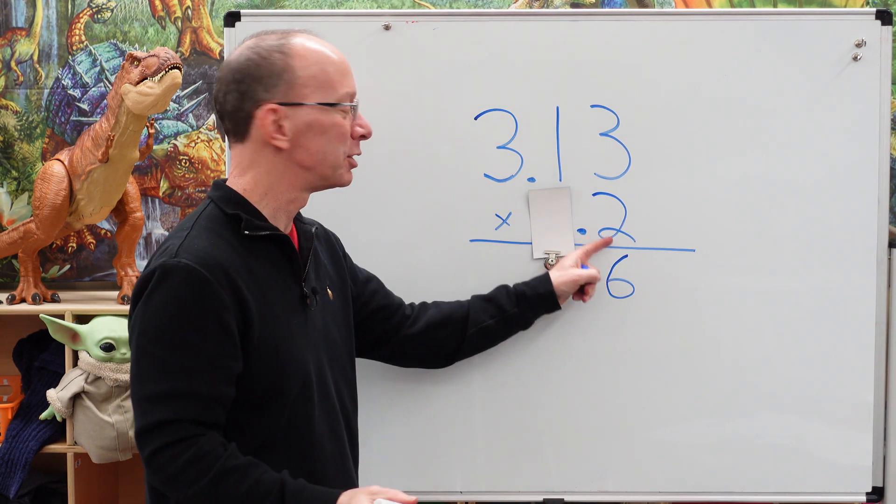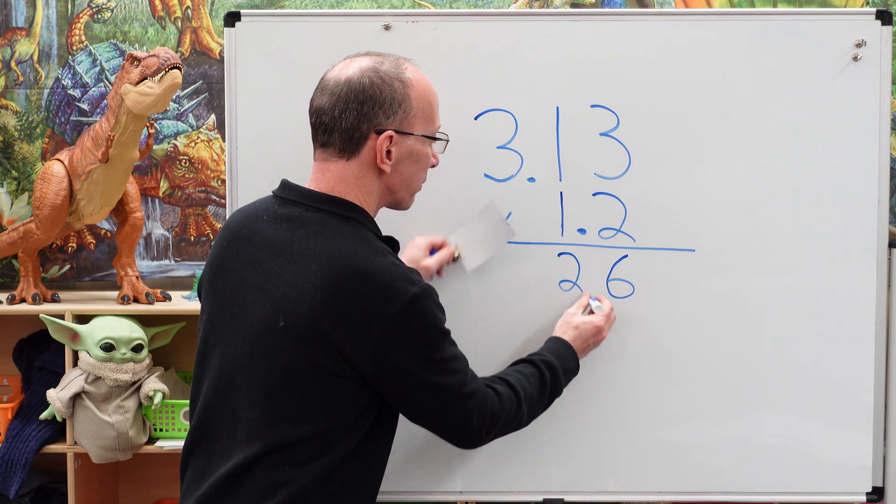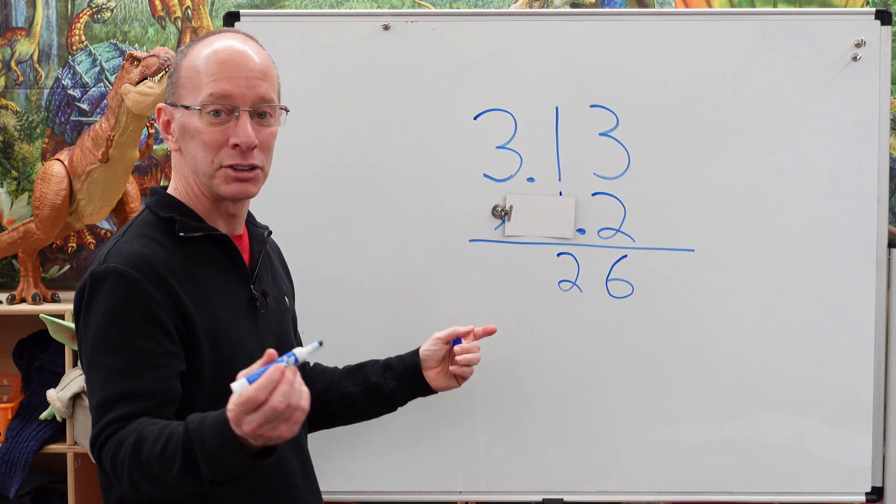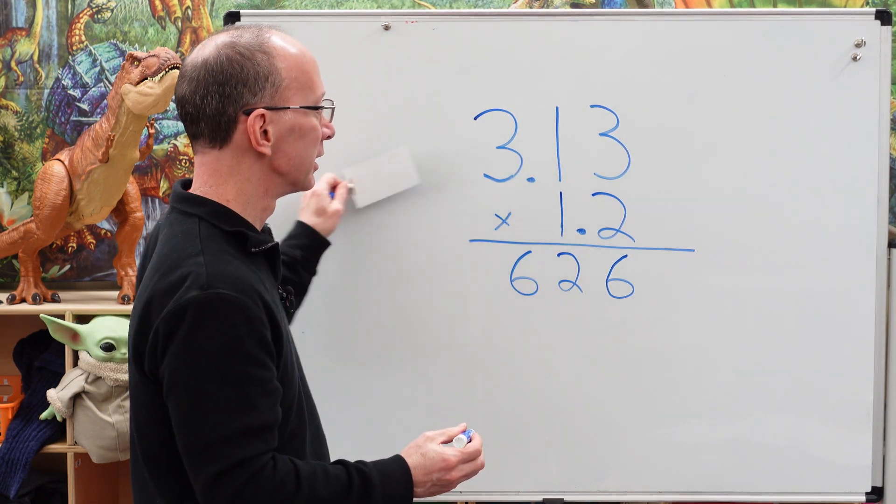Move on to the next number. 2 times 1? 2. Uno dos. I'm going to move this over here. And then we have 2 times 3? 6 again. All right, let's take a look here.